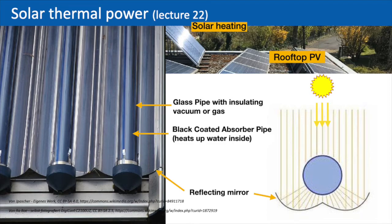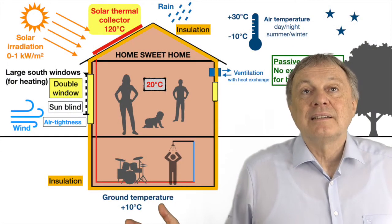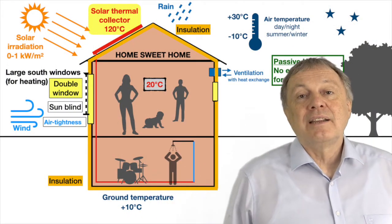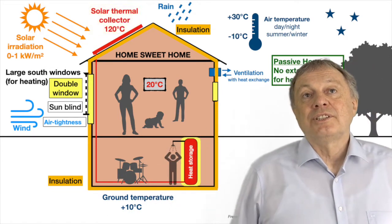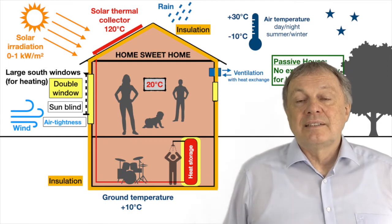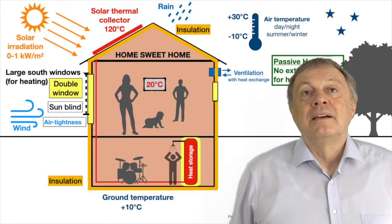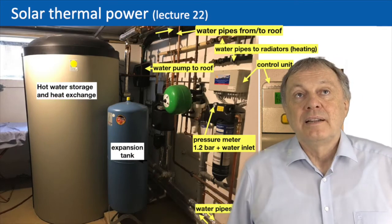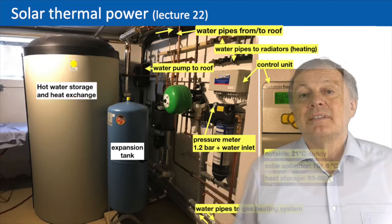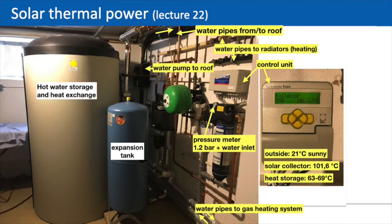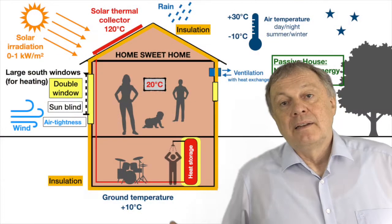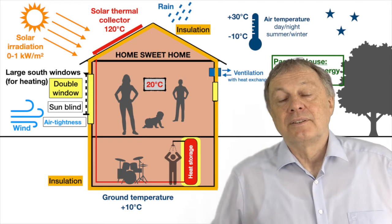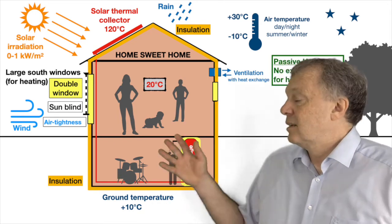Of course, if there are clouds there's no heating, so you can only shower when the sun shines — unless you install a heat storage. The heat storage stores heat when the sun is shining for use when it isn't. I have that at home: a big tank of water in my cellar, heated from the solar collectors to about 80–90 degrees Celsius. Inside the storage there's a heat exchanger that heats up fresh water for cooking, showering, and also for heating the house — details are in lecture 22.